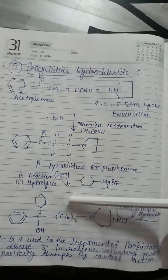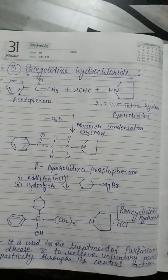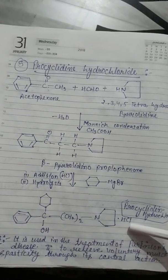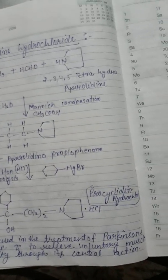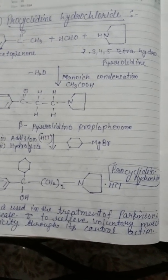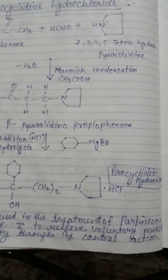After Mannich condensation, the intermediate product undergoes hydrolysis and an addition reaction to yield procyclidine hydrochloride. This drug is used in the treatment of Parkinson's disease and to relieve involuntary muscle spasticity through its central action. This concludes the synthesis of anticholinergic drugs.